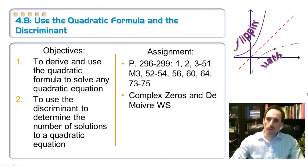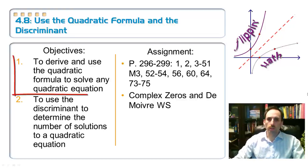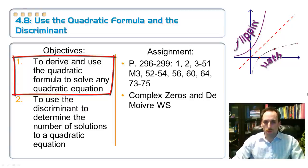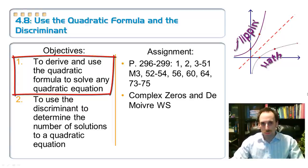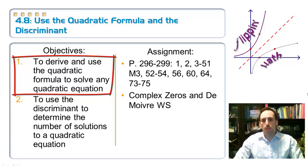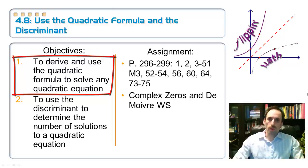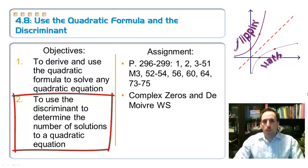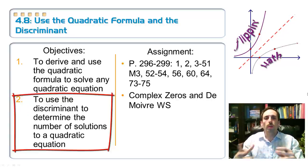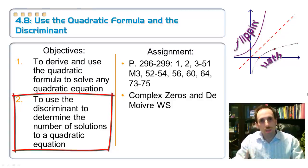Good evening, and welcome to your lesson on 4.8, using the quadratic formula and this thing called the discriminant. We have two objectives today: we're going to be deriving the quadratic formula — in another math class you may have used it before, but today we're actually going to come up with it — and also use the quadratic formula to solve quadratic equations. Our second objective is about using the discriminant to determine how many answers we could have and what kind of answers they are. The word discriminant sounds like discriminate, but in a good way — it helps us discriminate between the different kinds of answers we can have.